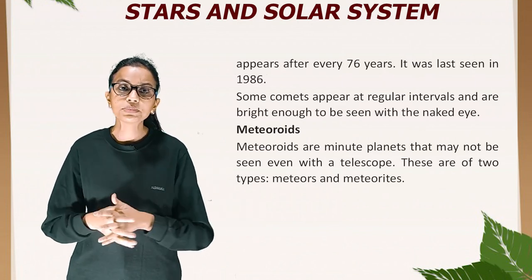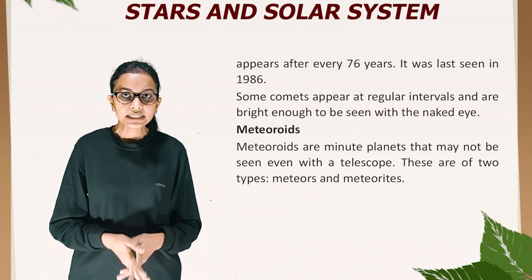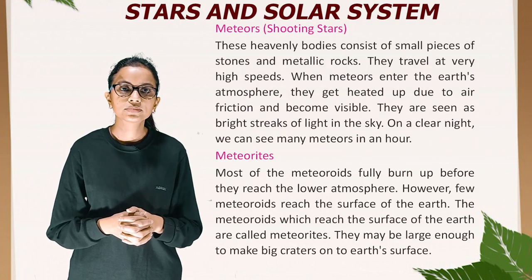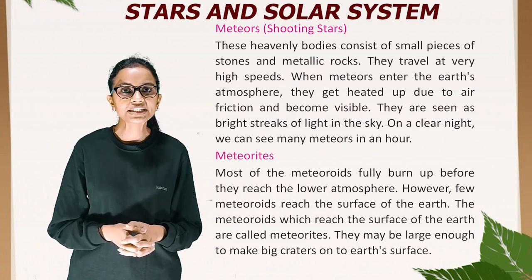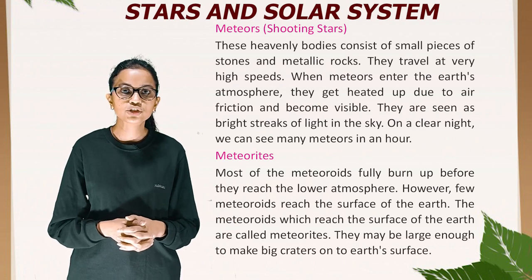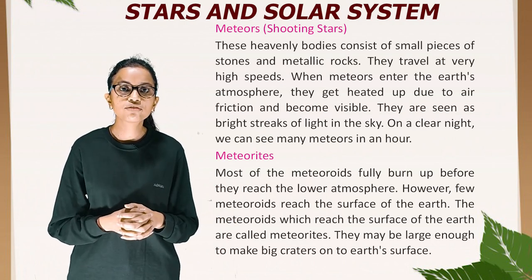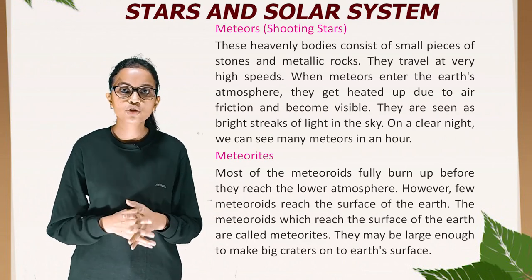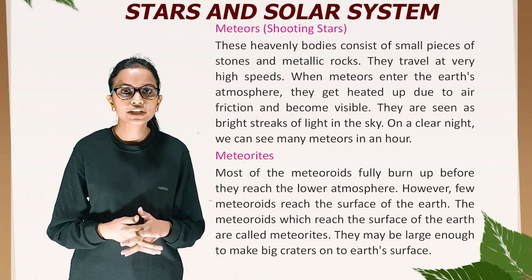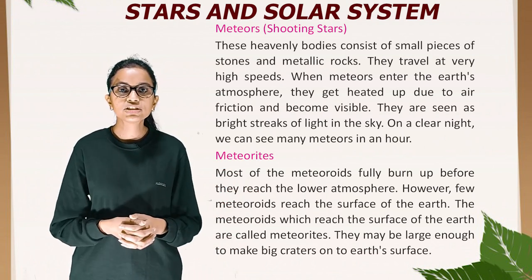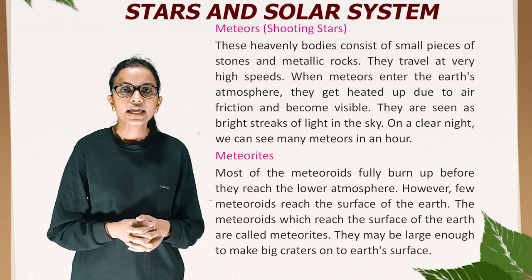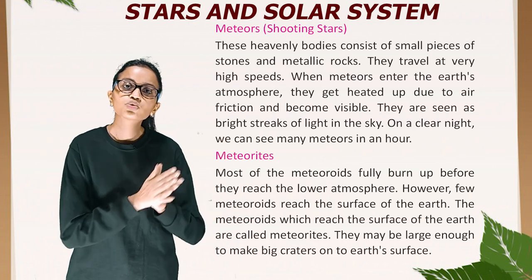Meteoroids are minute planets that may not be seen even with a telescope. They are of two types: meteors and meteorites. Meteors, also called shooting stars, consist of small pieces of stones and metallic rocks that travel at very high speed. When meteors enter the Earth's atmosphere, they get heated up due to air friction and become visible as bright streaks of light in the sky. On a clear night we can see many meteors in an hour. Most meteoroids fully burn up before they reach the lower atmosphere; however, those few that reach the surface of the Earth are called meteorites. Meteorites may be large enough to make big craters on Earth's surface.